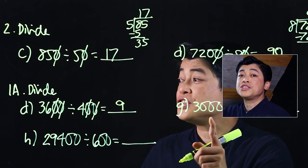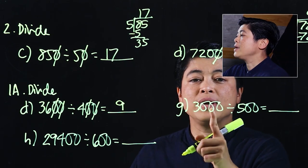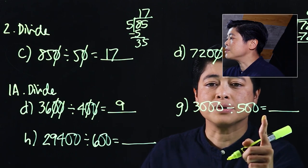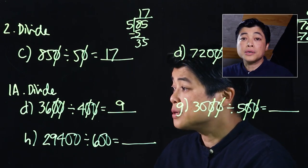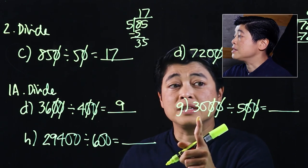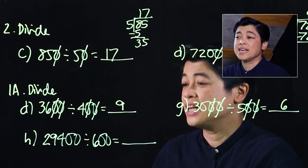In letter G, we have three zeros and two zeros, so only two of the zeros will cancel. In the end, we just divide 30 divided by 5, which must be 6.